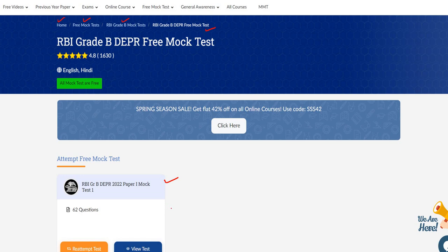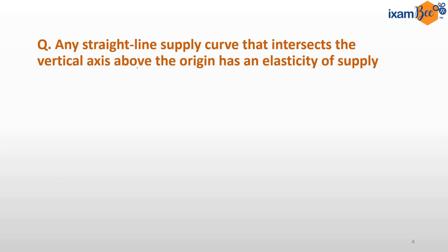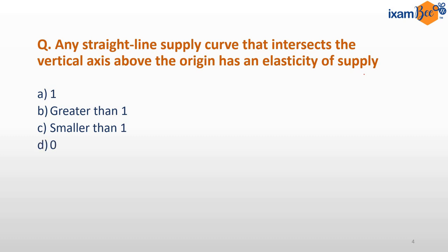Now let's discuss the question. The question reads: any straight line supply curve that intersects the vertical axis above the origin has an elasticity of supply equal to what? Options are: 1, greater than 1, smaller than 1, 0, or there is insufficient information to determine the value.